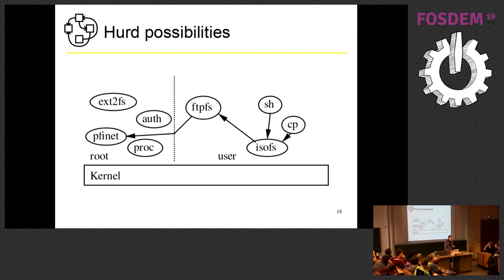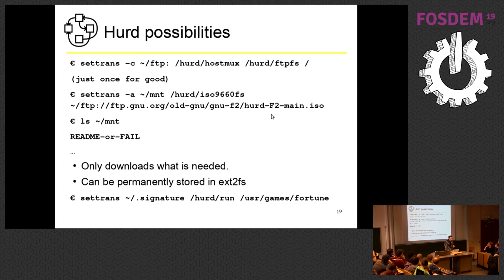You can do things like have an FTPFS running on top of the TCP/IP stack, then run ISOFS opening an ISO on the FTP server, and then run a shell within the ISO image. You set a translator on an FTP mount point, open a URL, start an ISO file system, and look at it. Since LS just looks at the root of the ISO image, the ISO translator only has to ask FTPFS to download a bit of the ISO image — you don't have to download everything just to see what's in there.